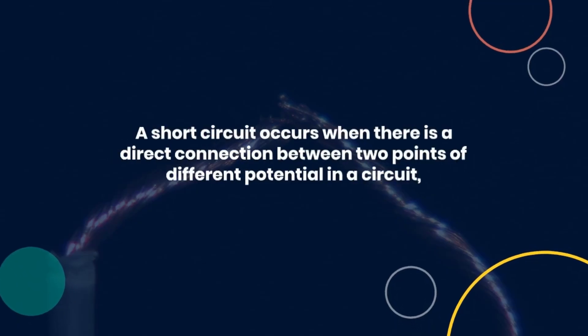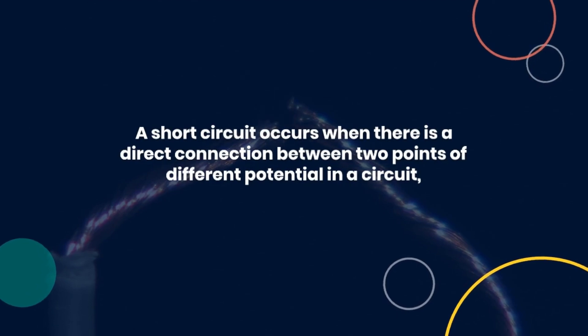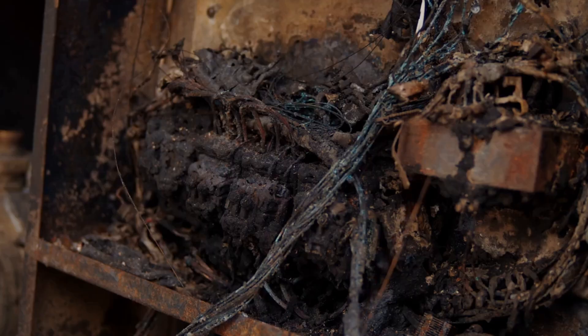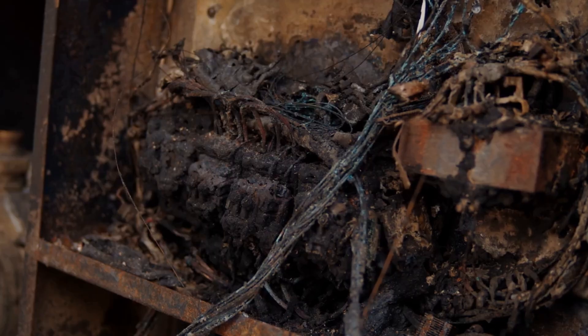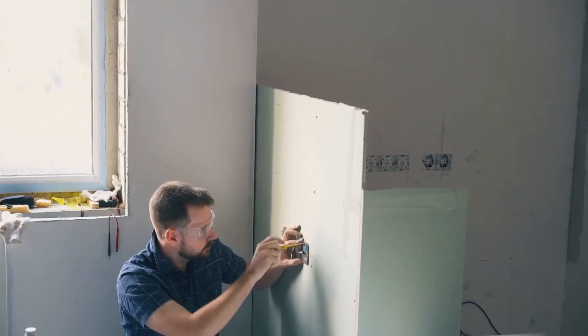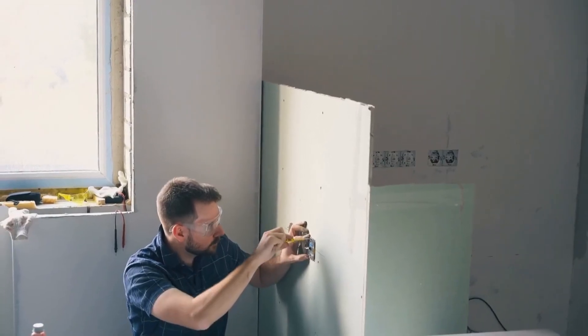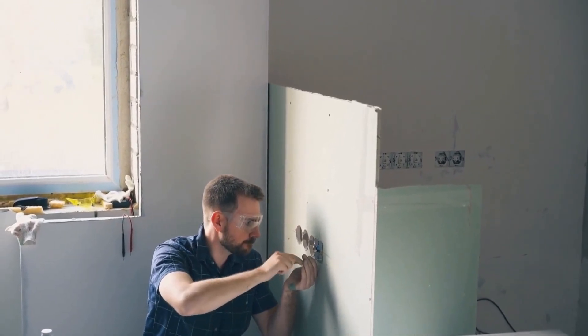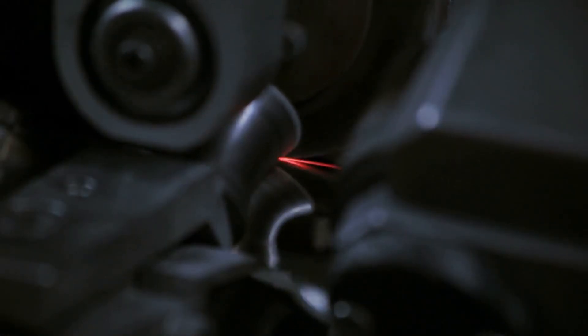Question thirteen: What is a short circuit? A short circuit occurs when there is a direct connection between two points of different potential in a circuit, causing excessive current to flow. This can result in damage to components and potential hazards. Recognizing and preventing short circuits is crucial for maintaining safety and reliability in electrical systems.